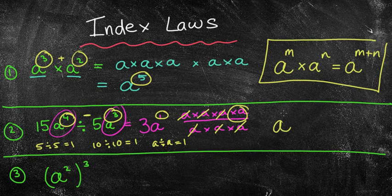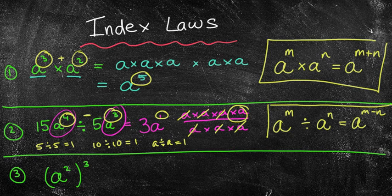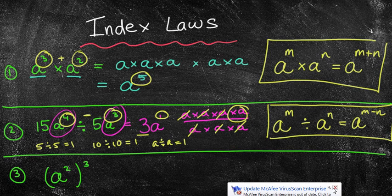And if we look at the rule, it's kind of opposite to the multiplication rule. So a to the power of m divided by a to the power of n. If the bases are the same and we're dividing, what we can actually do is subtract the indices. So 4 take away 3 is 1, or just 3a.